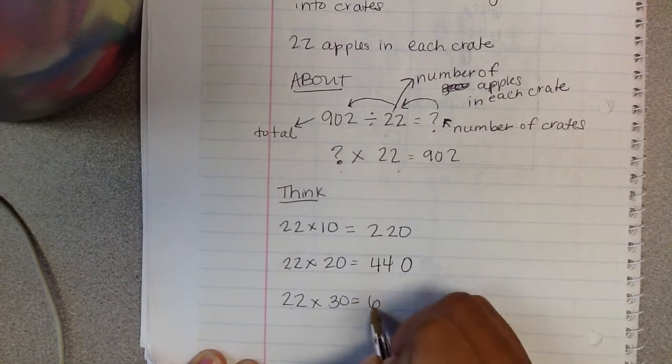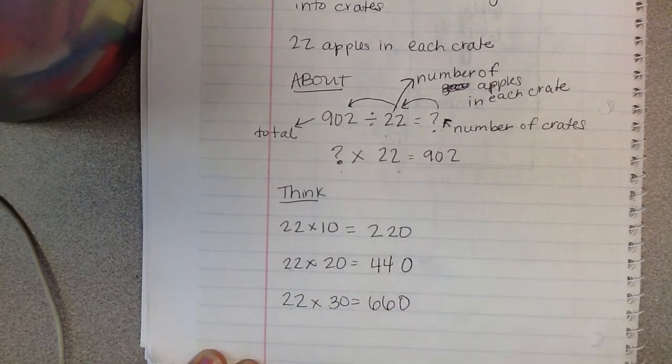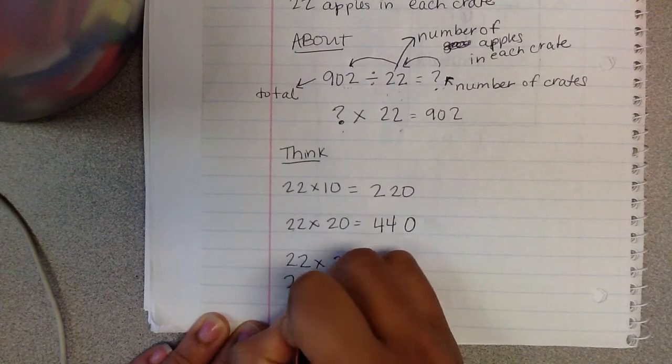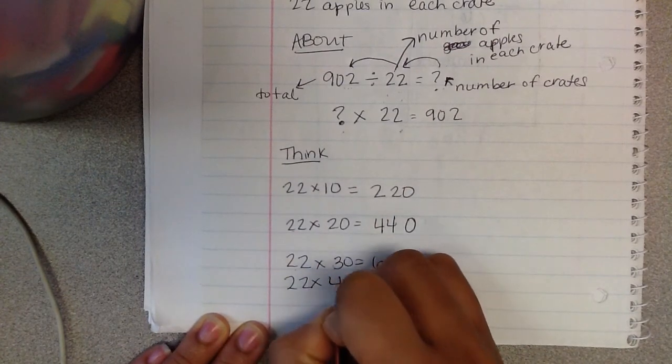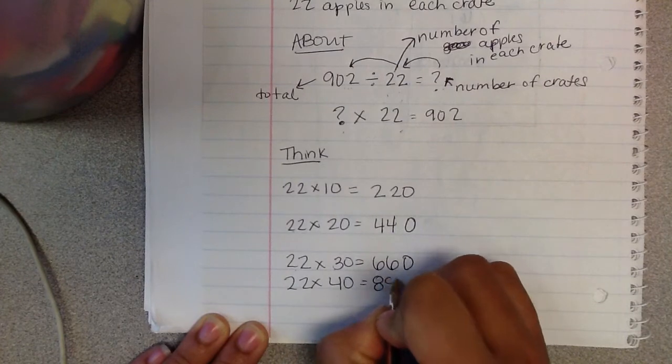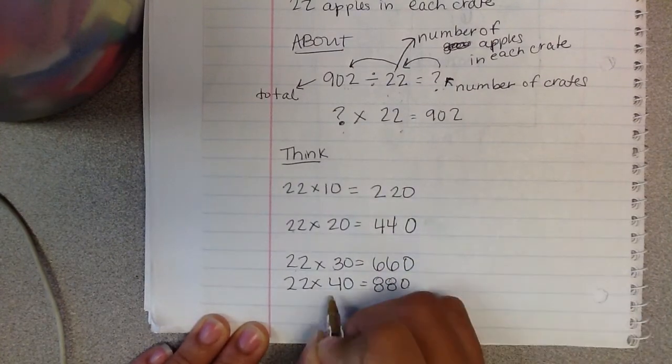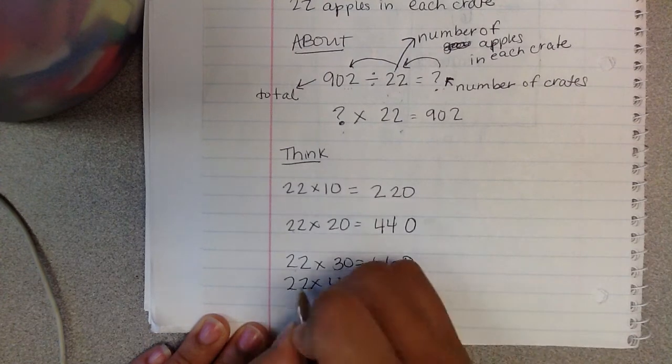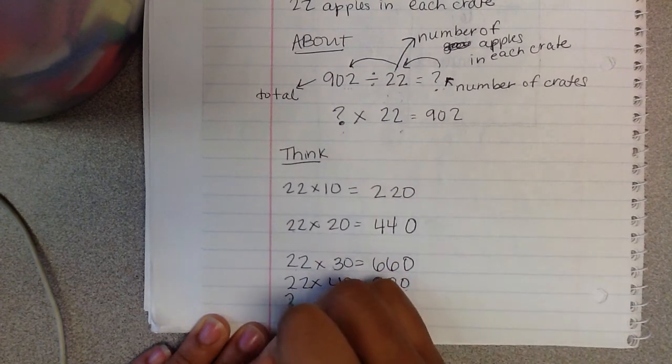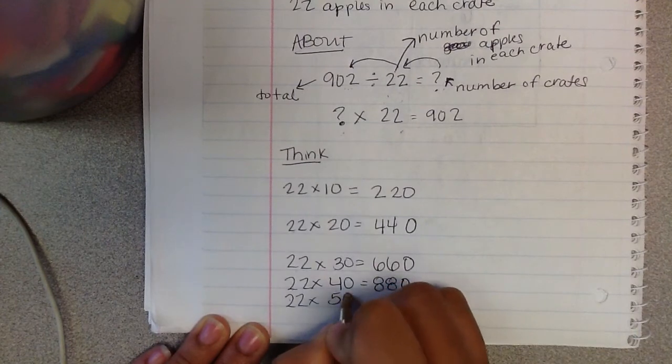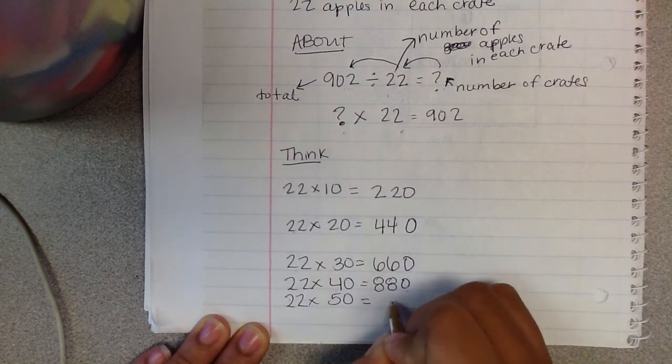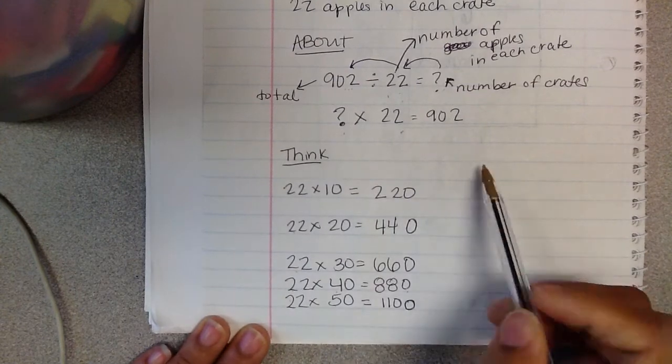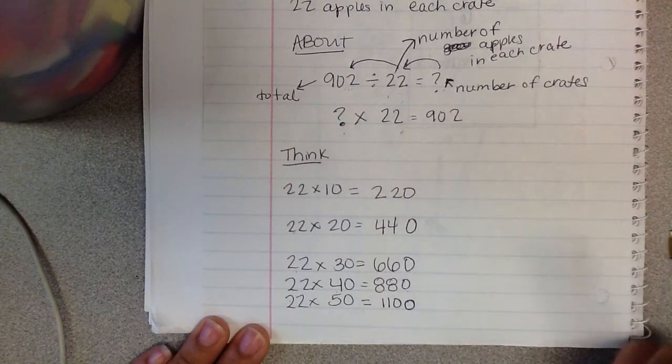Getting closer, I'm going to try 22 times 40. That's 880, because 4 times 22 is 88, and add my 0. Then if I do, I'm not quite there. Let's see if I can get closer. 22 times 50, 5 times 22 is 110, and then I add one more 0. So that is more than 902.